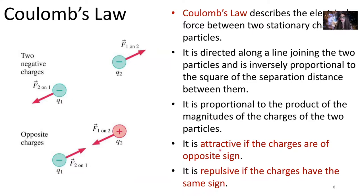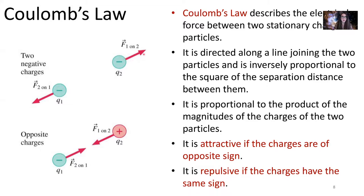If the charges are of opposite sign, the electric force is attractive, meaning it pulls the objects together. If both particles have the same sign of charge — both positive or both negative — the Coulomb force is repulsive and those particles push away from each other. For example, with two negative charges, the Coulomb force is repulsive and the force vectors point away from each other. Because force is a vector, the Coulomb force is also a vector.